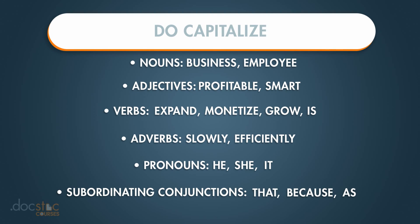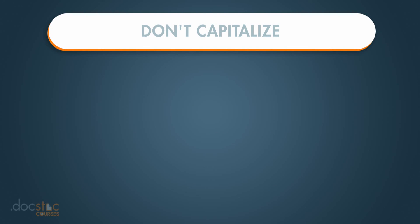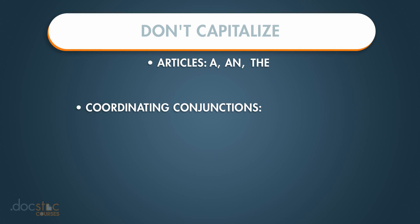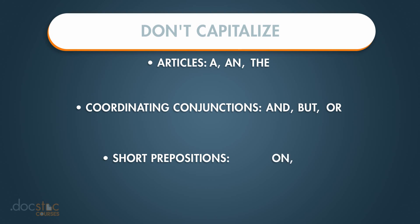There are also a lot of things that you should not capitalize, including articles like 'a,' 'an,' and 'the,' coordinating conjunctions such as 'and,' 'but,' and 'or,' and short prepositions — generally less than five letters — such as 'on,' 'by,' and 'under.'